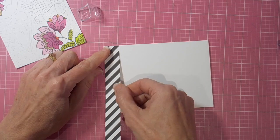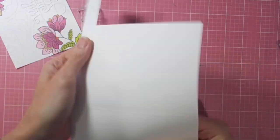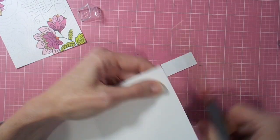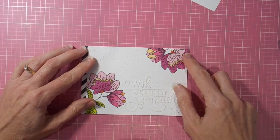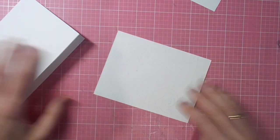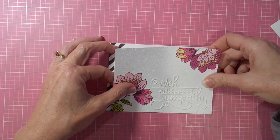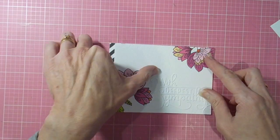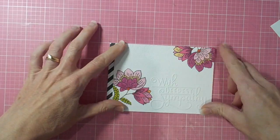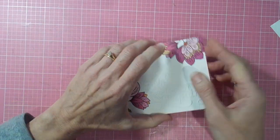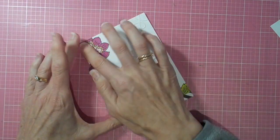A little bit of patterned paper from MFT down the left-hand side, and then using my tape runner just to add my stamped piece to the front, and my card is complete. Thank you so much for joining me today. I've hoped you enjoyed seeing this card come together, and I hope to see you again soon.